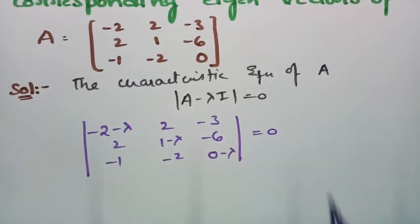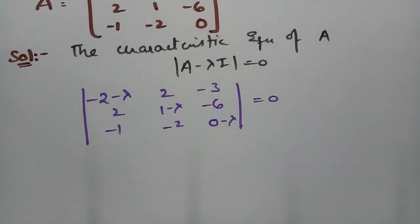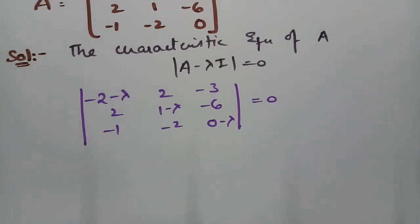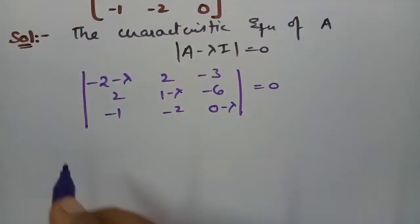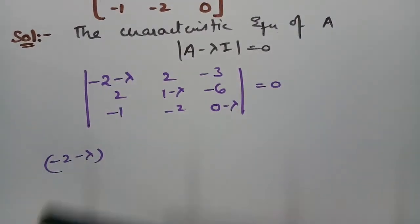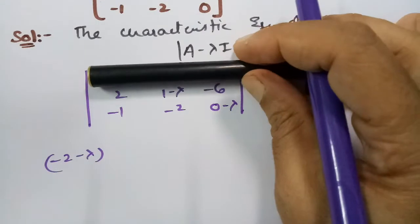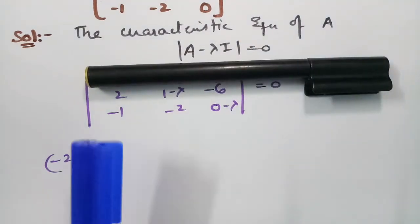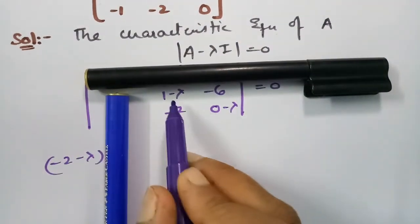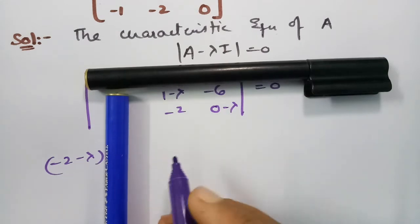Now I have to find the determinant. Starting with the first element (−2−λ), I close its row and column. Then I multiply the remaining 2×2 submatrix elements to compute the cofactor expansion.